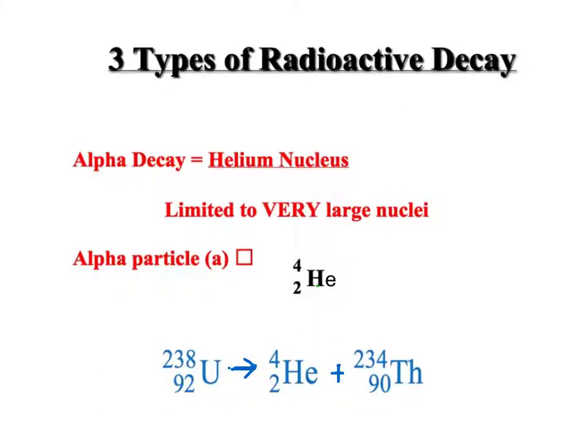There are three types of radioactive decay. Radioactive decay is when a very large nucleus will start to break down and parts of its nucleus kind of come unglued.